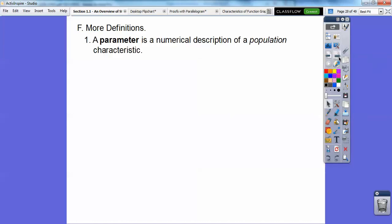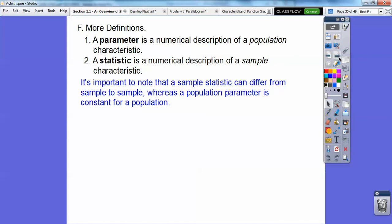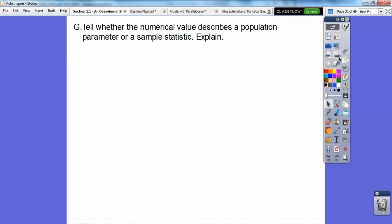Here's some more definitions. A parameter is a numerical description of a population characteristic. A statistic is a numerical description of a sample characteristic. It's important to note that a sample statistic can differ from sample to sample, whereas a population parameter is constant for a population. When you take samples out of that population, one sample will probably be a little bit different than the other. Hopefully it's a good random sample.